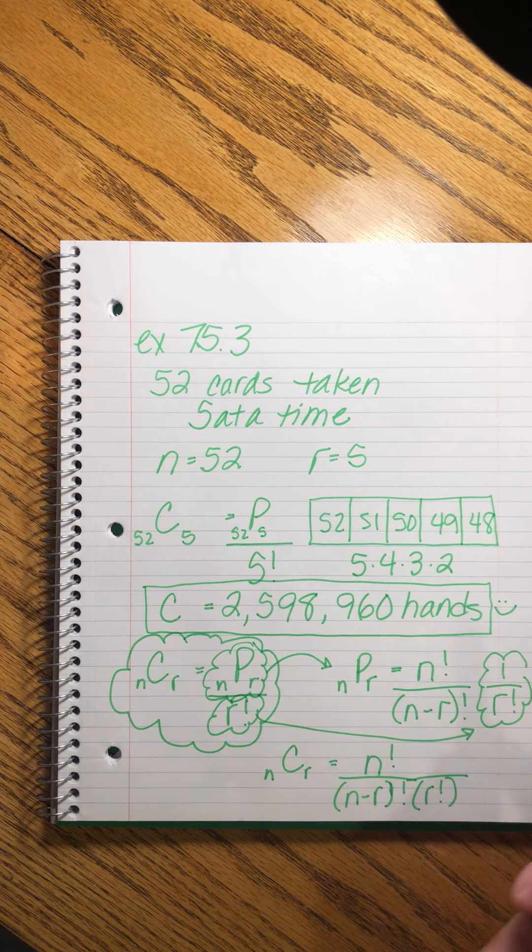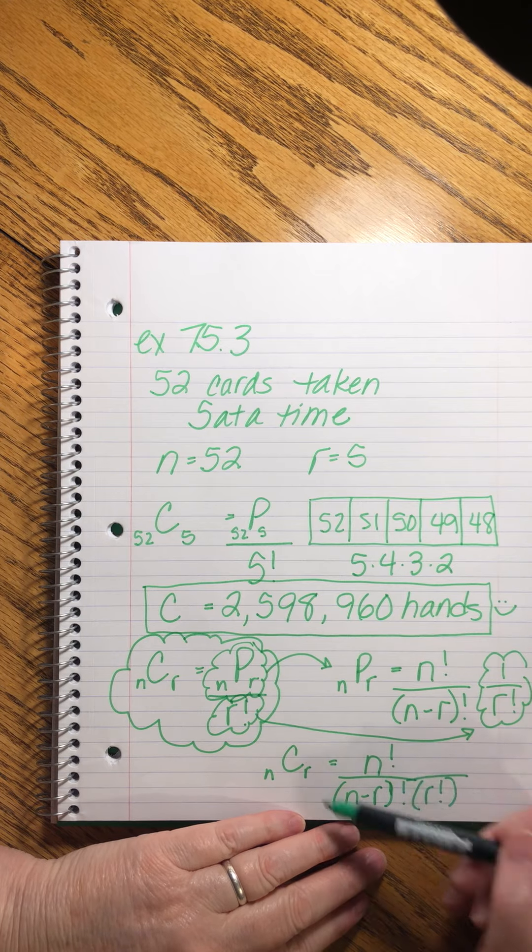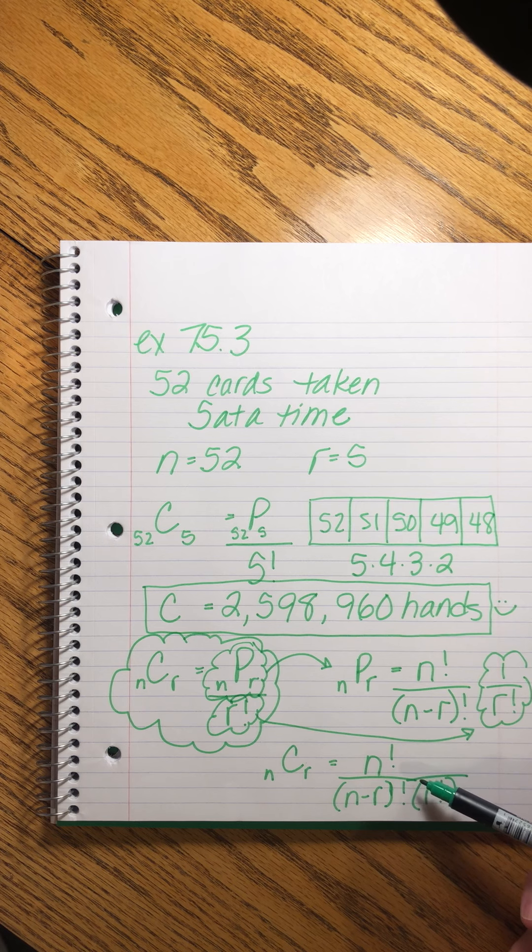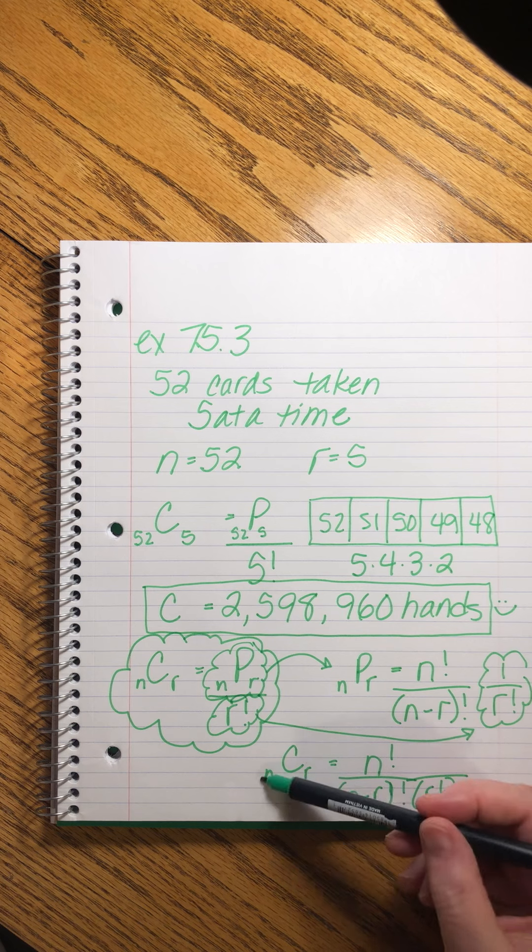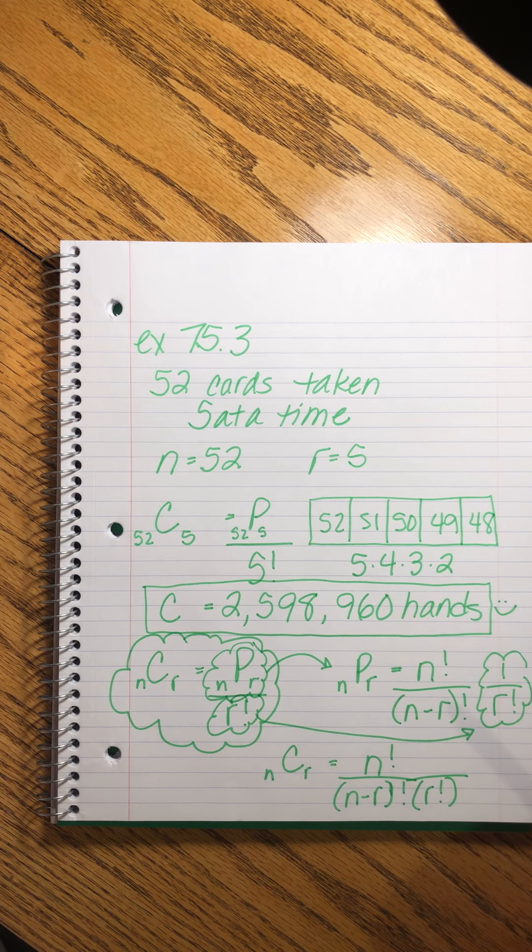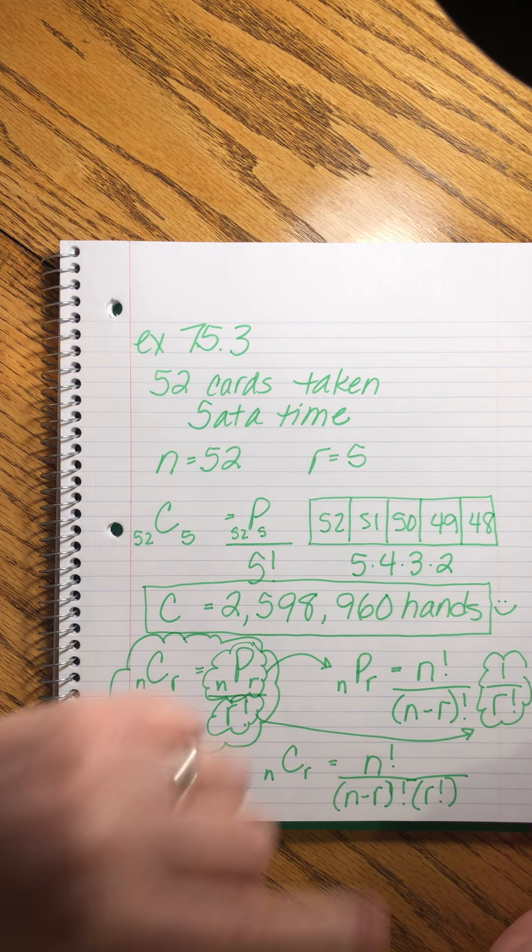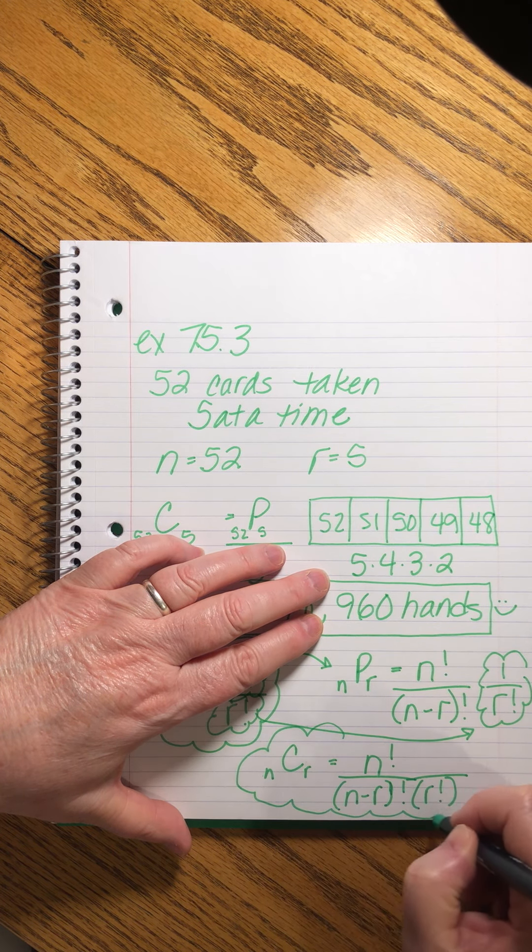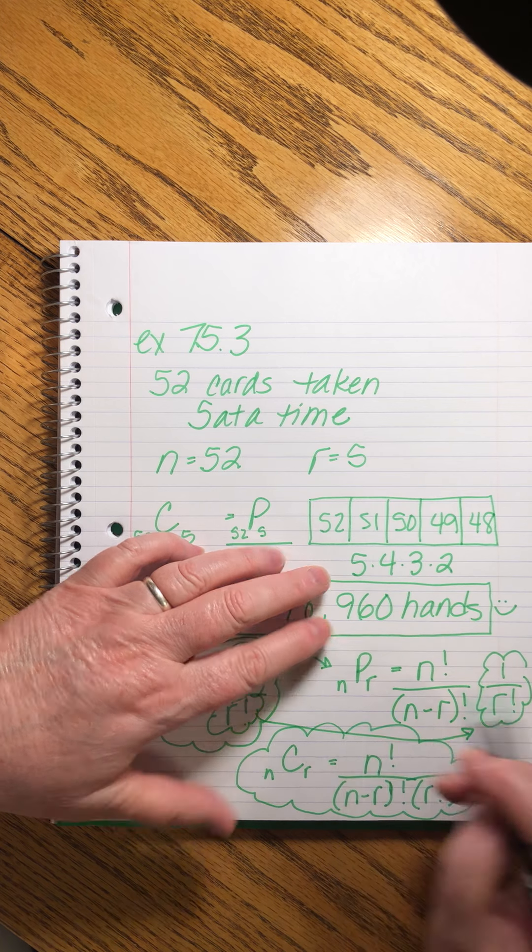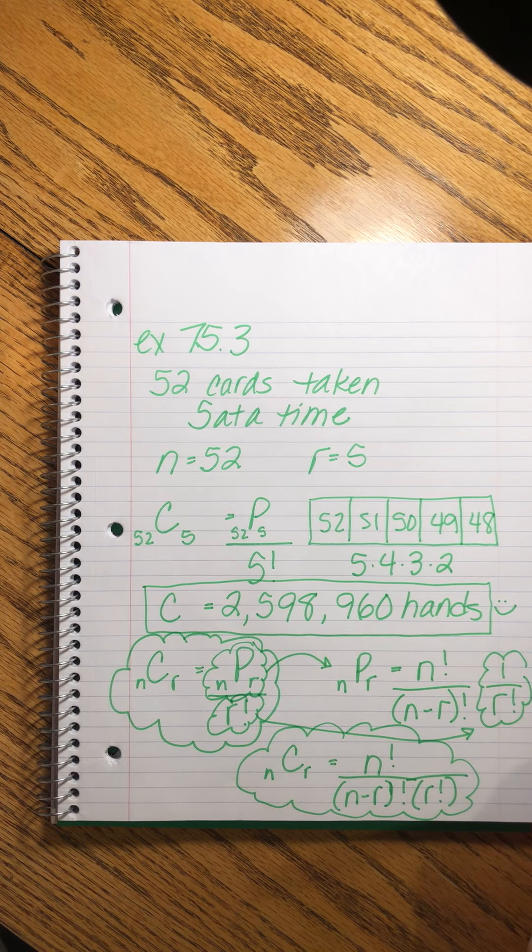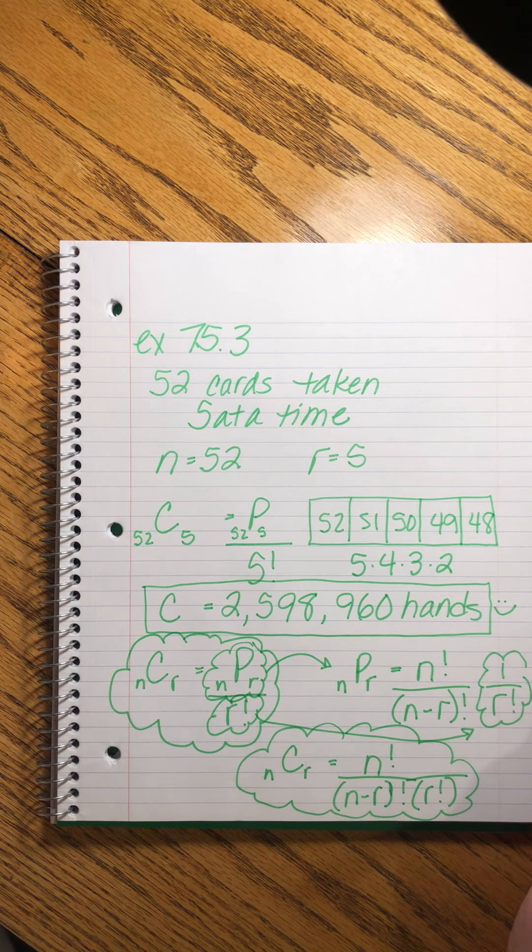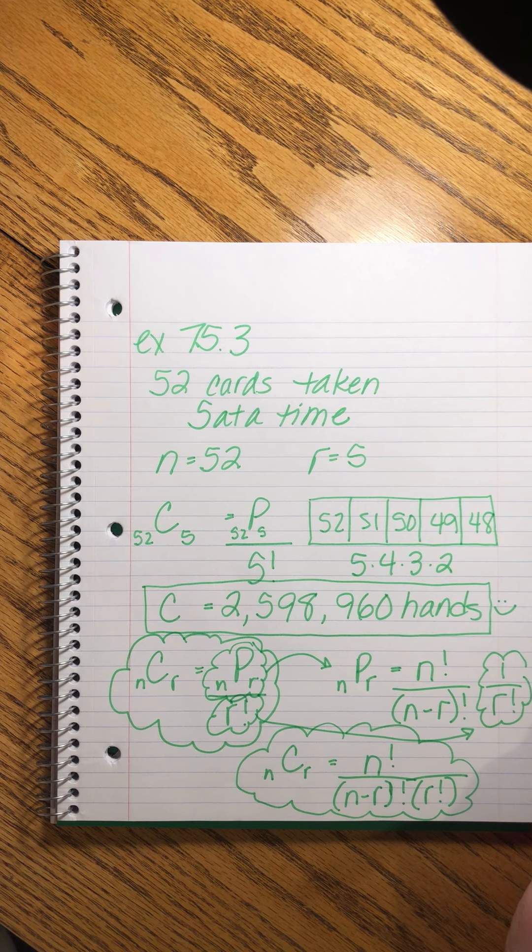So this takes the formula for permutations and shoves it into the calculation for combinations. So this is kind of an all-purpose formula. It's useful if your numbers are really big. That's what it's good for, so that you don't have to try to draw a picture. So this is kind of the ultimate formula for combinations. Because it rolls our formula for permutations into the adjustment that we have to make for combinations. It's the all-in-one formula.